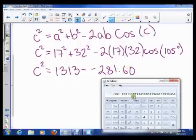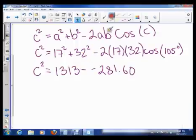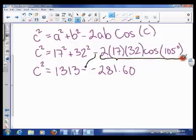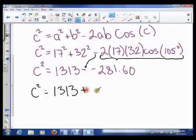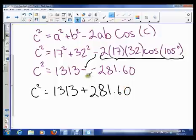I want you to notice that my answer here that I got on my calculator was negative. So I put down this minus sign. It's right there. So here is the minus sign. And then this whole thing ended up being negative 281.6. So that means that c squared is actually going to be 1313 plus 281.60. So minus negative is plus. So that's just happening because our answer here was negative.